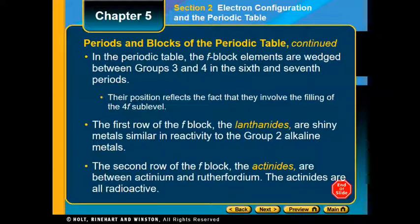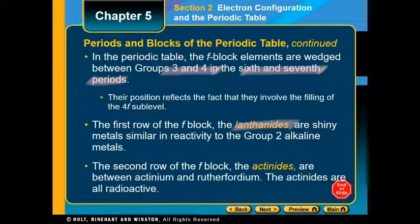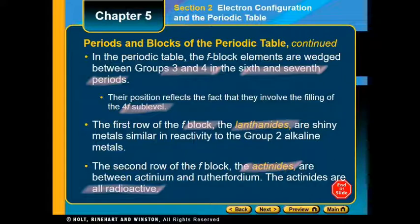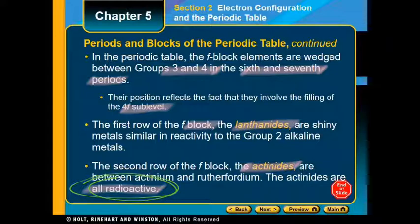The F block is wedged between groups 3 and 4 and sits in the 6th and 7th periods. The lanthanides are in the F block at the 4f sublevel — they are shiny metals similar in reactivity to group 2 metals. The second row of the F block contains the actinides, and all actinides are radioactive. Once you get back to class, we're going to color a periodic table to distinguish all of these different groupings visually.